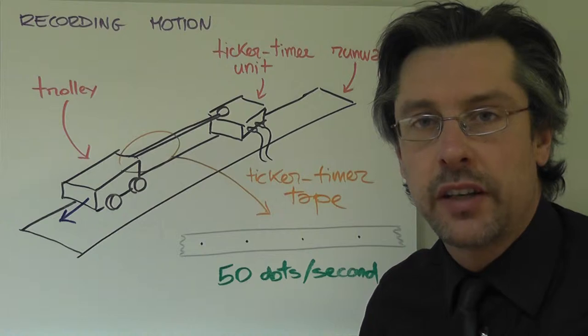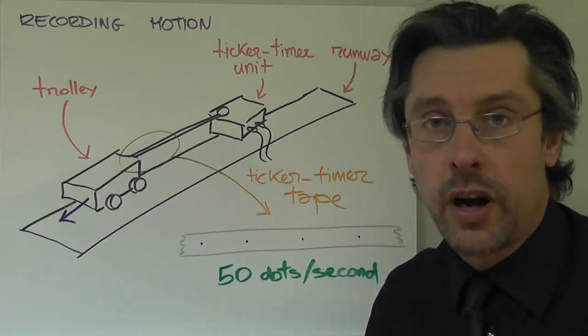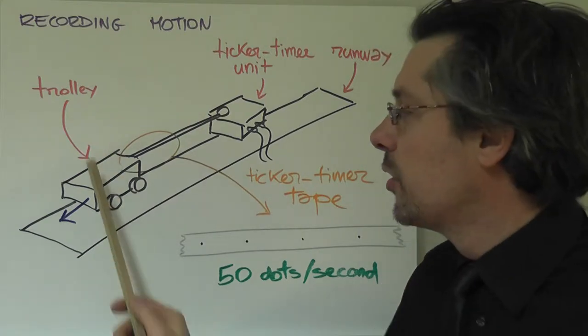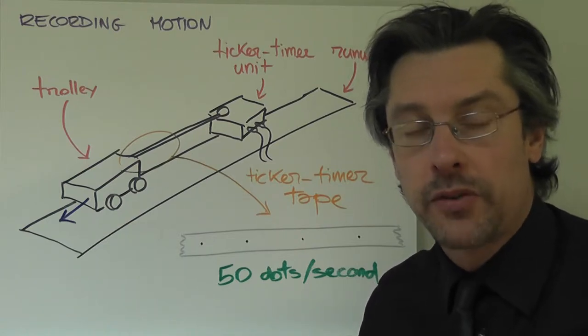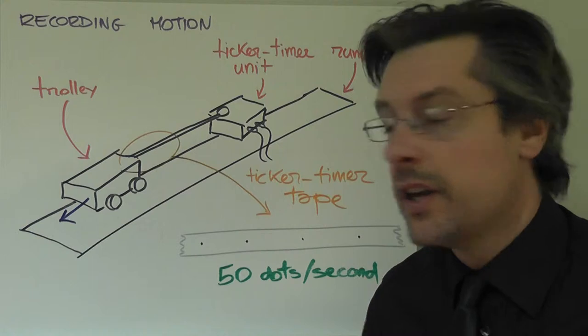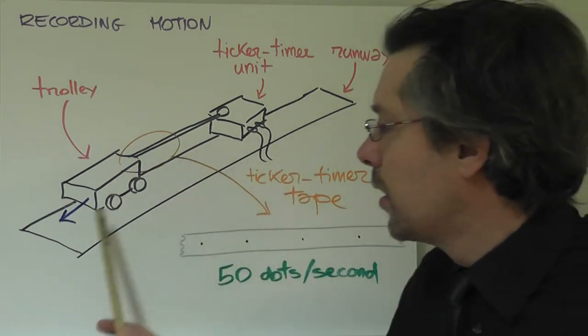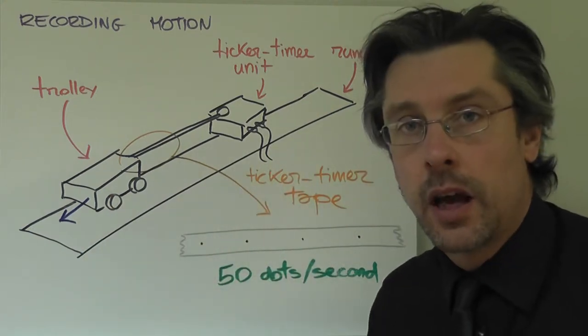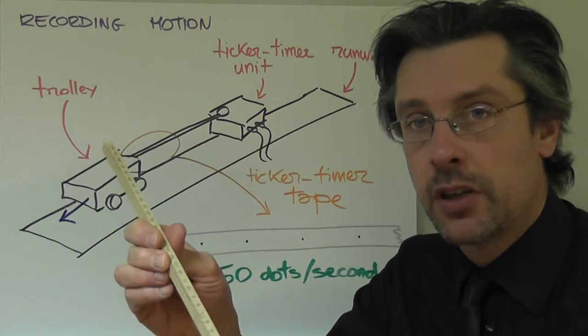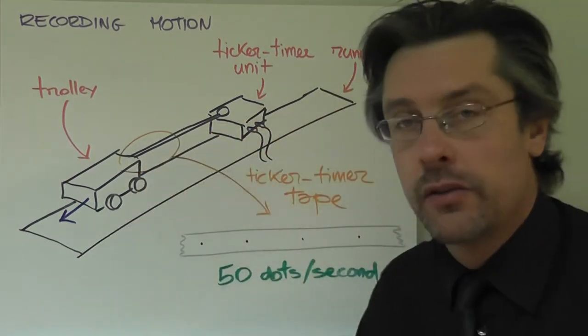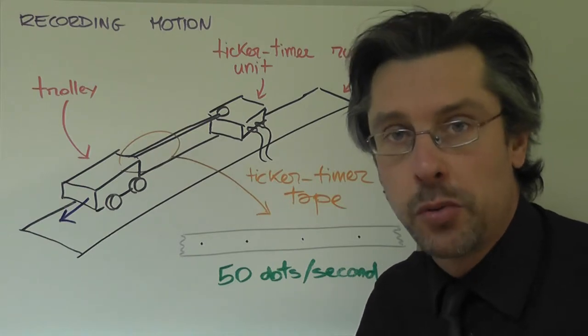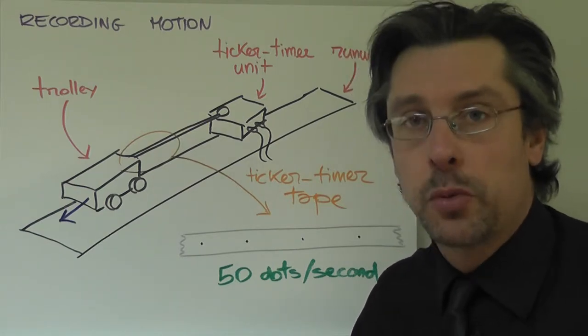In class we are going to study the motion of toy cars or as we call them in physics, trolleys. A typical example of studying the movement of a trolley is placing the trolley on a runway, a runway which is tilted so that the trolley once released will go down the runway and presumably it will speed up, so it will accelerate.